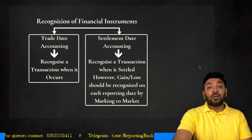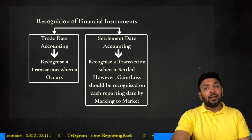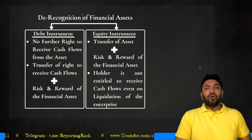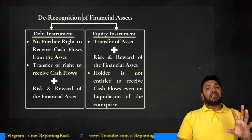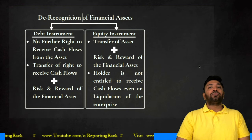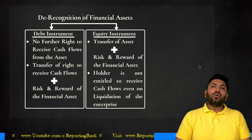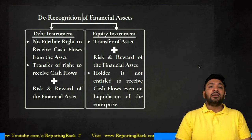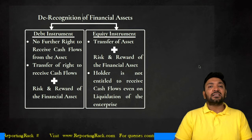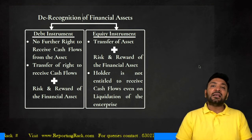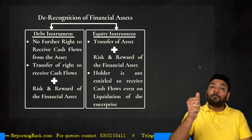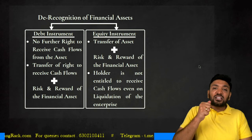Now let's get into the concept of de-recognition of financial assets. De-recognition means a financial asset already existing in the books of accounts no longer exists. Examples of financial assets include bills receivable, debtors, advances, equity investments in Infosys or Reliance, and investments in debentures or bonds of Tata Steel. Debtors are de-recognized when the debtor has settled the amount due and there is no further right to obtain any benefit or cash flows from that asset.